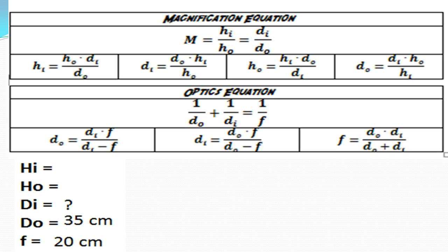If you have a derived set of equations, feel free to use them. We're solving for the distance of the image. The top equation — the derived magnification equation — involves the height of the image and the height of the object, which we don't have, so we can't use that formula. We need only one unknown, which is di. The optics equation derivation for di alone is: di = do times f, divided by do minus f. We have all those variables, so we can proceed.